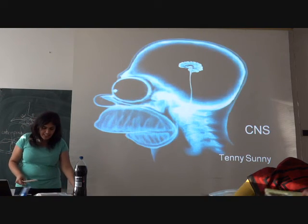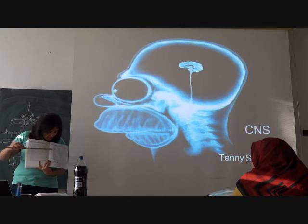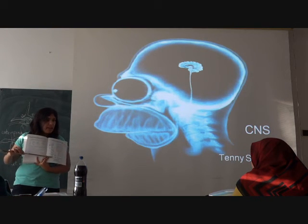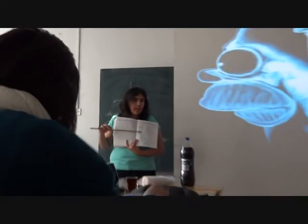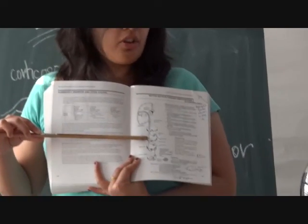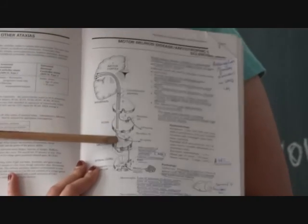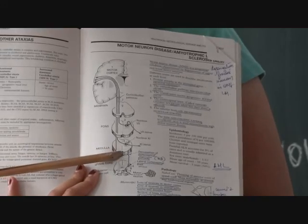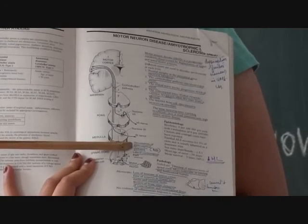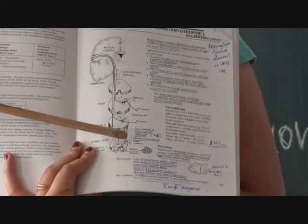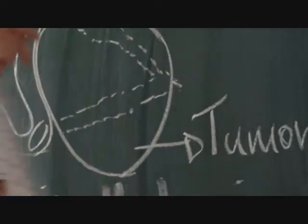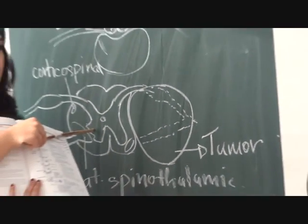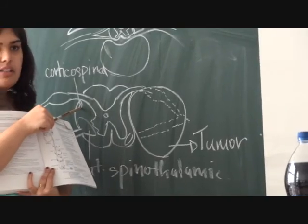It starts from the motor cortex. This is the midbrain, pons, medulla, and the spinal cord. So it starts from the motor cortex, goes down to the midbrain — there is no crossing over at the midbrain. Goes to the pons — no crossing over at the pons. But then it reaches the medulla, and just below the medulla there is a crossing over to the opposite side, which goes to the spinal cord. From the spinal cord it divides into the lateral and anterior corticospinal tracts. The anterior corticospinal tract is 20% of the nerves and the lateral is 70–80%.